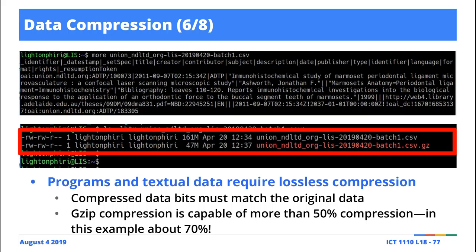If one text file is 161 megabytes and you have 16 million of them, that's enormous. Part of what I was doing was moving these files between different machines over a network. Money wasn't really an issue, but time was. The original file versus the compressed file — this is almost more than a 50 percent reduction in size.